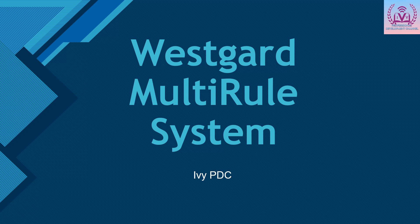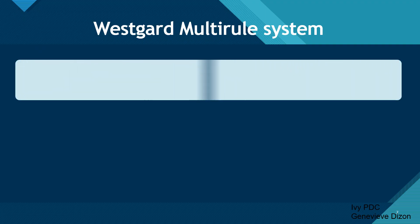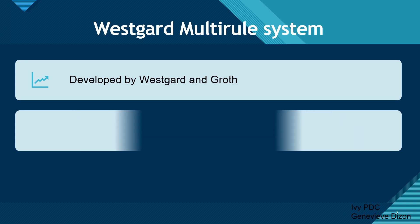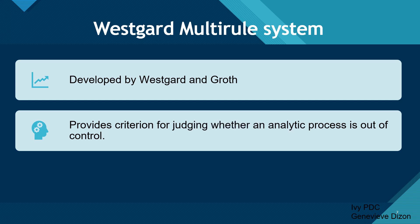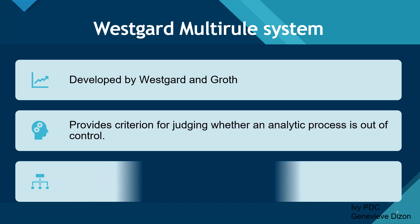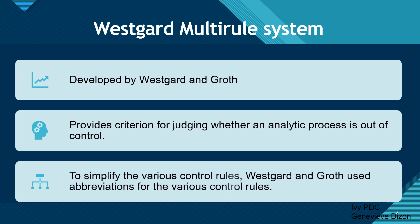Let's talk about the different Westgard multi-rules that are applied in the laboratory quality control system. Now that you know what the Levy-Jennings chart is, it's time to learn the Westgard multi-rule system, because the Levy-Jennings and the Westgard rules work hand-in-hand together. This multi-rule system was developed by Westgard and Groth, and it provides the criterion for judging whether the analytic process is out of control. To simplify the various control rules, Westgard and Groth use abbreviations.